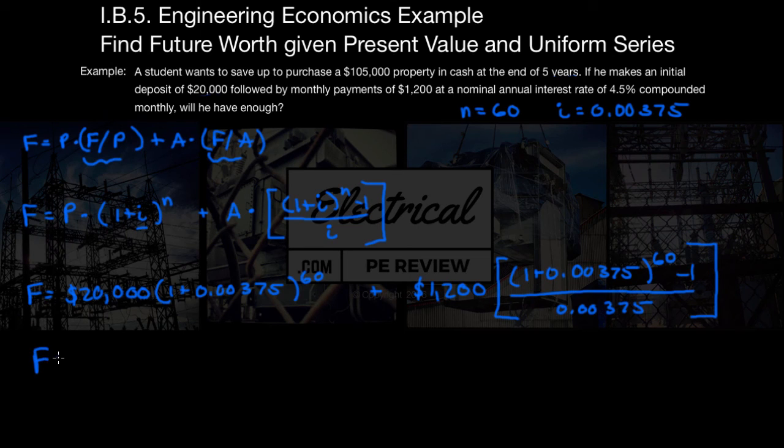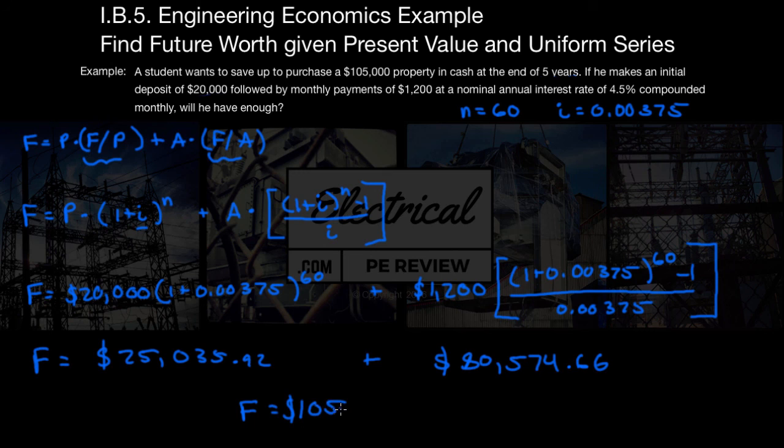All right, next we have, this is going to equal F equals the first term. We punch it in and we get about $25,035.92. Next over here, we punch it in and we get just about $80,574.66. So we add them all together and we end up with a final answer of after 60 months or five years, our student investing in this manner, he's going to make a total withdrawal of $105,611.